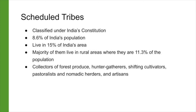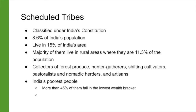The Scheduled Tribes include collectors of forest produce, hunter-gatherers, shifting cultivators, pastoralists, nomadic herders, and artisans. A majority are heavily dependent on agriculture either as cultivators or agricultural labourers. They are India's poorest people, with 45.9 percent of their population falling in the lowest wealth bracket, compared to 26.6 percent of the Scheduled Castes. Only 22.6 percent of Scheduled Tribes live where there is a latrine within the premises.